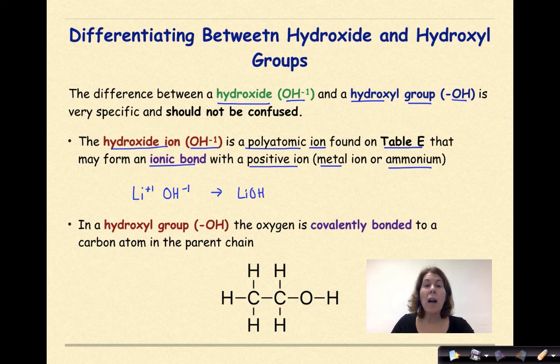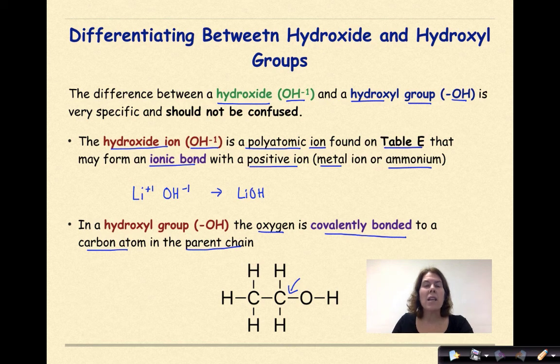In a hydroxyl group (-OH), the oxygen is covalently bonded to a carbon atom in the parent chain. This bond is a covalent bond where the carbon and the oxygen are sharing a pair of electrons. There's not a big enough difference in electronegativity values between the carbon and the oxygen for the OH to be completely released and become an ion. Therefore, it is an alcohol group. What you're looking for is this OH bonded to a carbon, and you know that is an alcohol group.